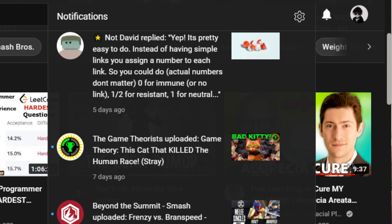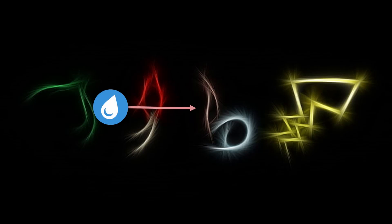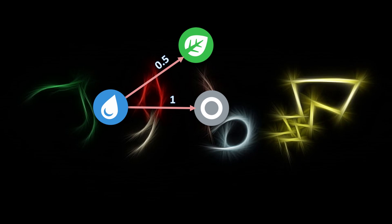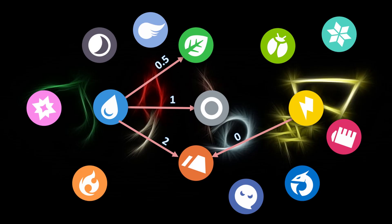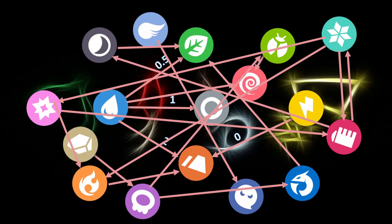He said: instead of having them point to what they're strong against, just make them point to everything and then set a value to them. So water pointing to normal type has a value of one. When it points to grass, it has a value of 0.5 because it's resistant — half damage. When it points to ground, it has a value of two. Electric pointing to ground would have a value of zero. So I did it — that's what this is about.